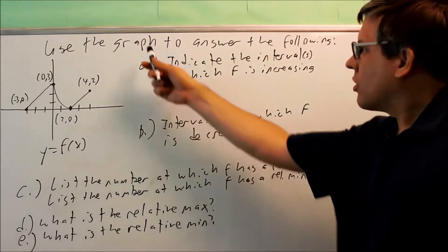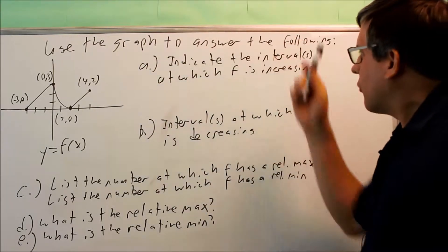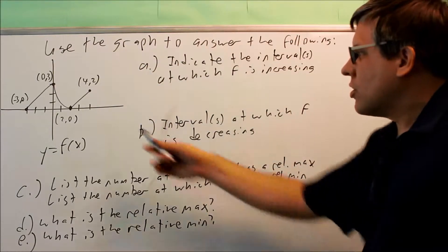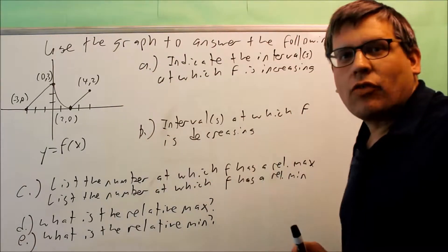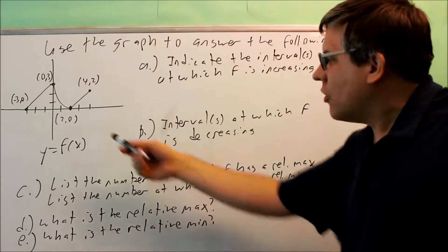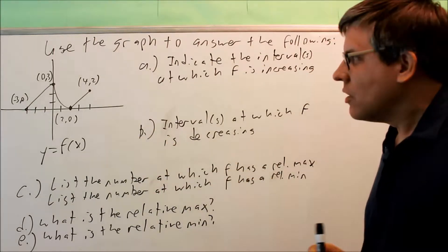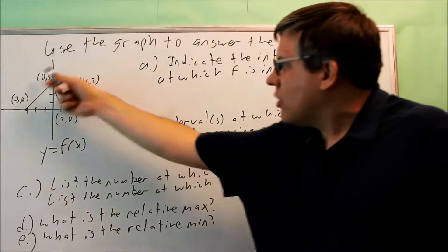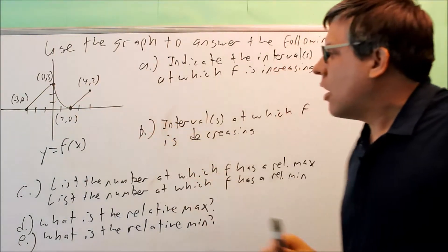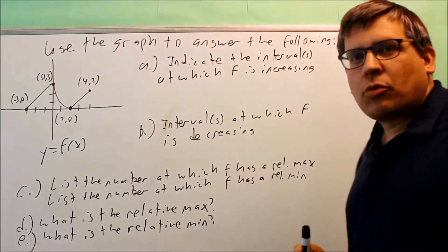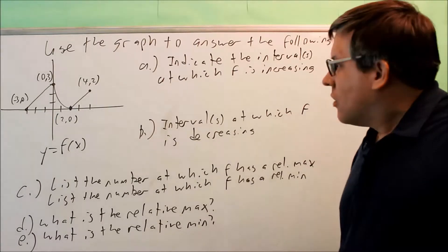We want to use the graph to answer the following questions. Here's a given graph — this is a graph of y equal f of x, and these points here are labeled for us.